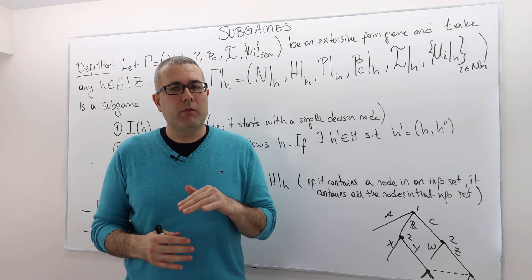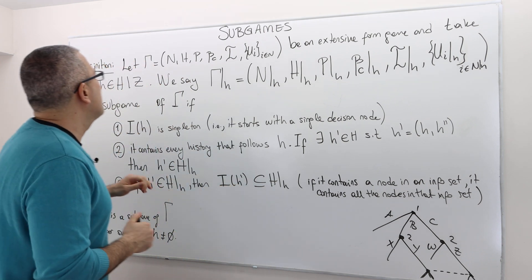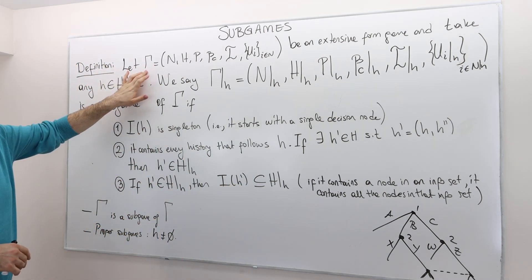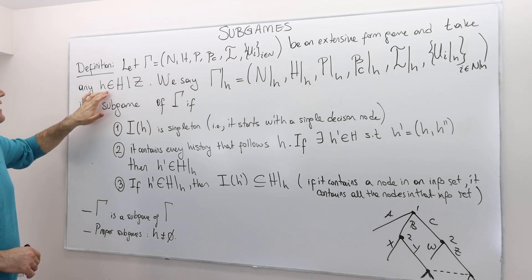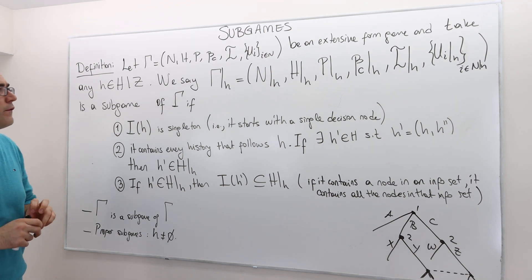Now I am going to define the subgame formally. Take any extensive form game, and then take any history H which is non-terminal, meaning the game is not yet over.